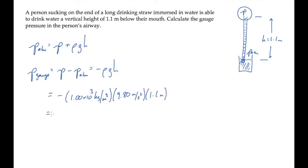Substituting the density of water and the height and calculating gives us a gauge pressure of negative 1.1 times 10 to the 4th Pascals.